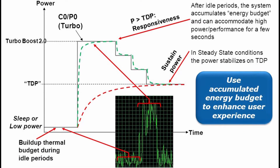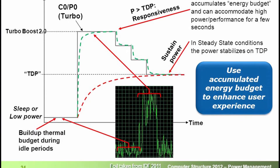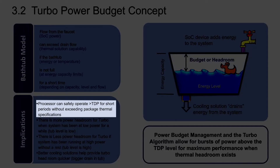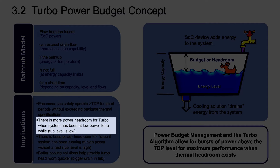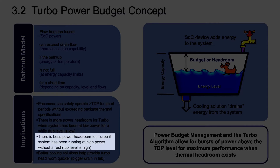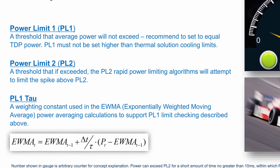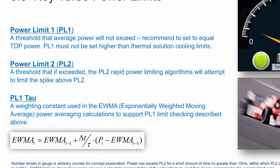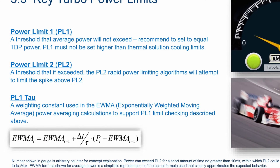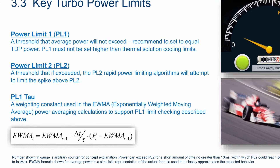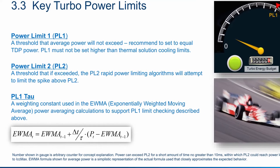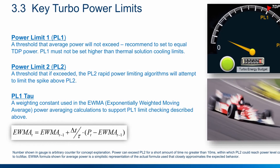This last point is crucial to understanding how Turbo Boost works. The processor can safely operate above TDP for short periods of time when there is sufficient headroom. The headroom expands when the processor has been at lower power for a while, and is reduced when the system has been running at high power. The Turbo Boost algorithm works according to a proprietary EWMA — Exponentially Weighted Moving Average — formula. The exact formula is not known, but we can do a simple test to demonstrate the behavior.